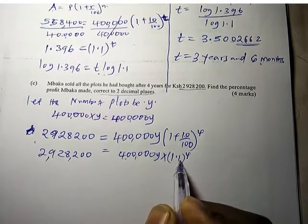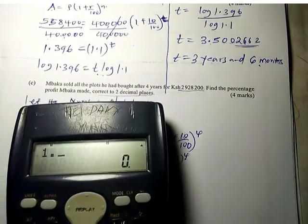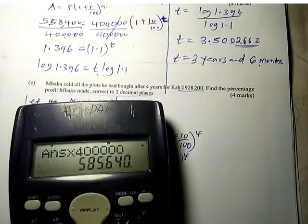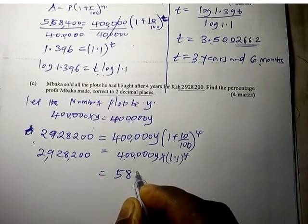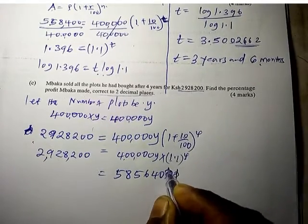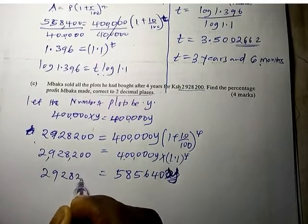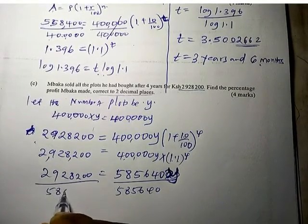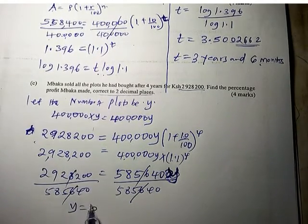Press 1.1 raised to power 4, you get the answer, then multiply times 400,000. So we have 585,640y equals 2,928,200. We want y, so we divide by 585,640. Y equals 5, so he had 5 plots.